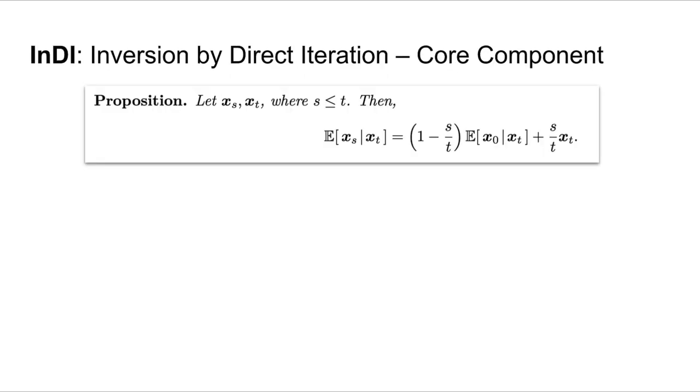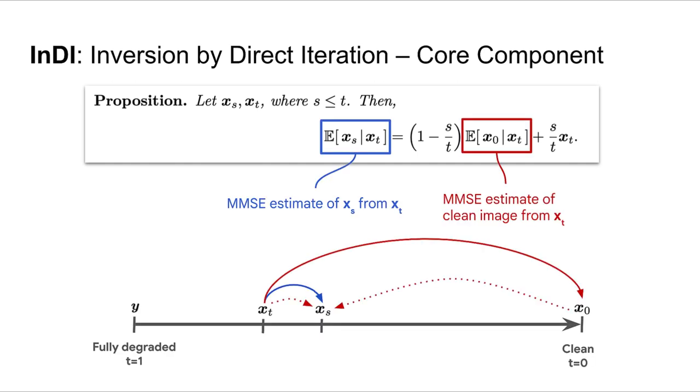To do this multi-step restoration, we need an iterative procedure. This is given by the following proposition, which is a straightforward consequence of our linear convex model. This proposition relates the MMSE estimate of x_s, that is, the clean image having degradation at time s, starting from x_t, the image with degradation t, where s is smaller than t.